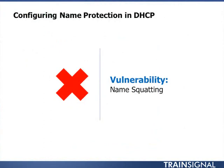We've finished configuring option 81 and handed off to DHCP the responsibility for updating DNS data from client computers. What happens next is we have to deal with a challenge created by that option 81 configuration. Now that DHCP is doing all the registration work, DNS doesn't know the original owner of the data being registered. And DHCP, once it's put data in DNS, by default kind of forgets what it's put there. The vulnerability is something called name squatting.